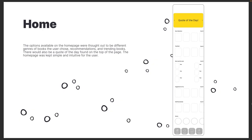For the home page, I wanted it to be very simple, showing different genres, top-rated books, suggestions, staff recommendations, and stuff like that — making it simple and very intuitive for the user.